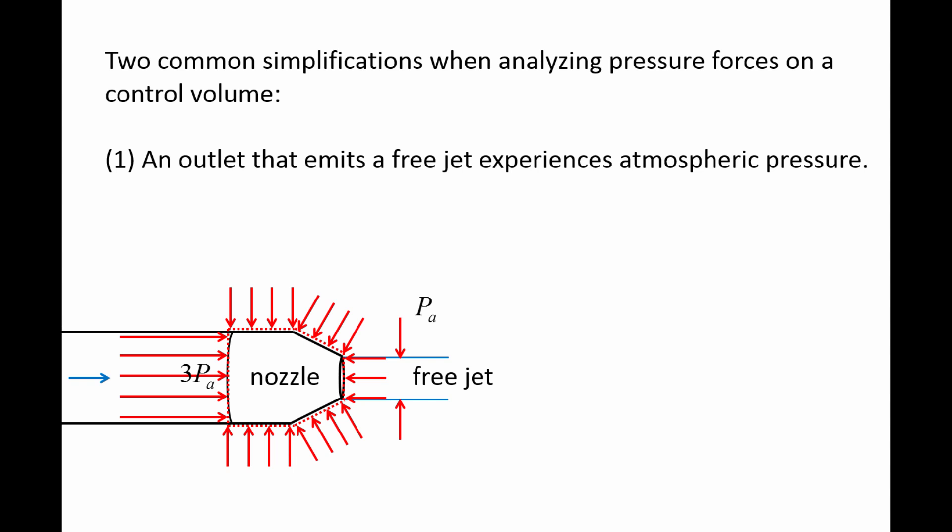The pressure forces could be analyzed using the picture shown here, but notice that the pressure force on the bottom of the control volume cancels out the pressure force at the top of the control volume. Additionally, some of the pressure force on the left side of the control volume is cancelled by the pressure force on the right side of the control volume. We could draw an equivalent picture showing the net pressure forces on the control volume. We would obtain this same picture if we had examined the gauge pressure forces on the control volume.